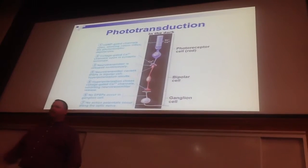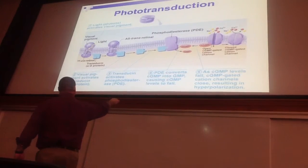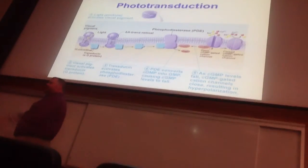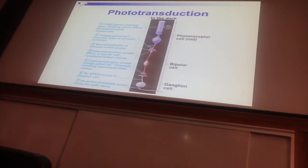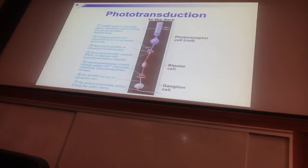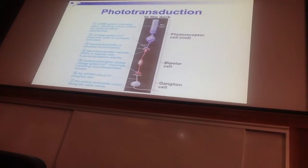We're going to talk about the consequence. If I have cisretinol, I have high levels of cyclic GMP and sodium and calcium coming in. In the dark, this is what happens. That photoreceptor rod is constantly—if I'm at minus 40, I'm well above threshold.